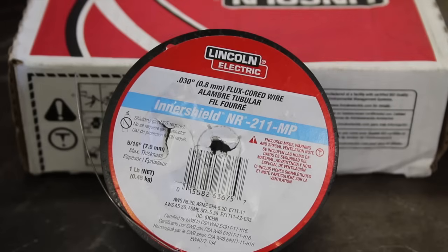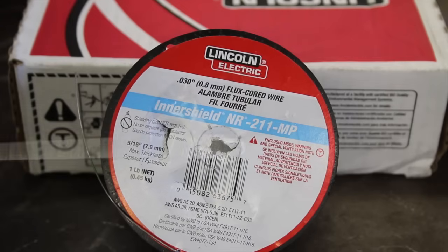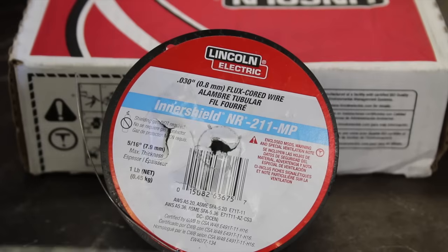So there are many manufacturers and they all call them something different, it's their trade names, but the AWS designation is E71T-11. Lincoln Electric happens to call this particular type of wire NR211MP. You can see that right here, NR211MP.